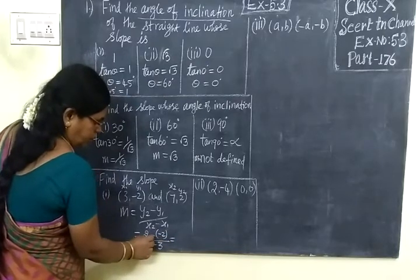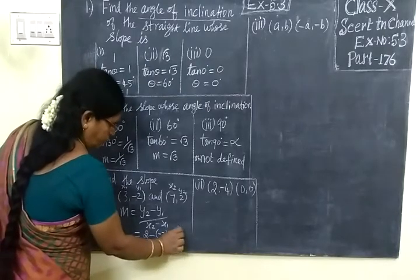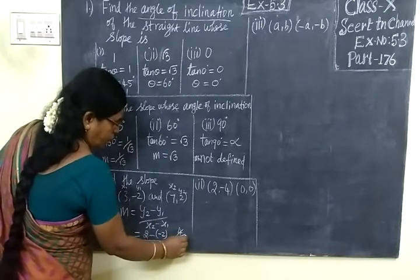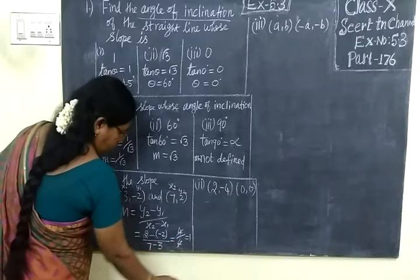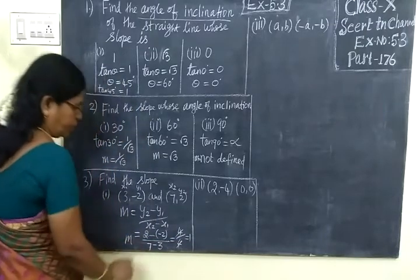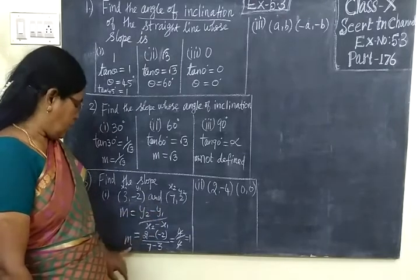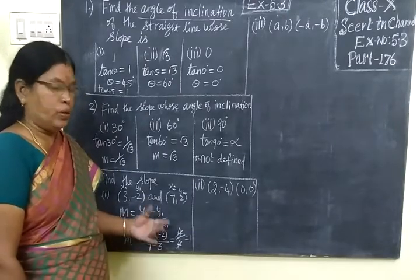So minus of minus is plus. So 2 plus 2 equals 4, by 7 minus 3 equals 4. If you cancel, the answer is 1. So slope m equals 1. They are asking only the slope value.